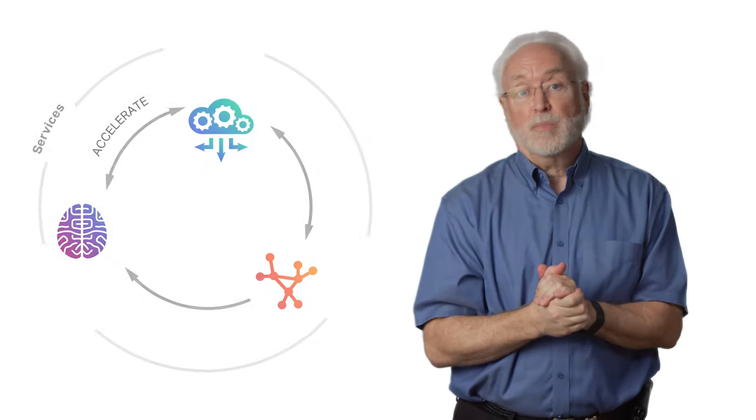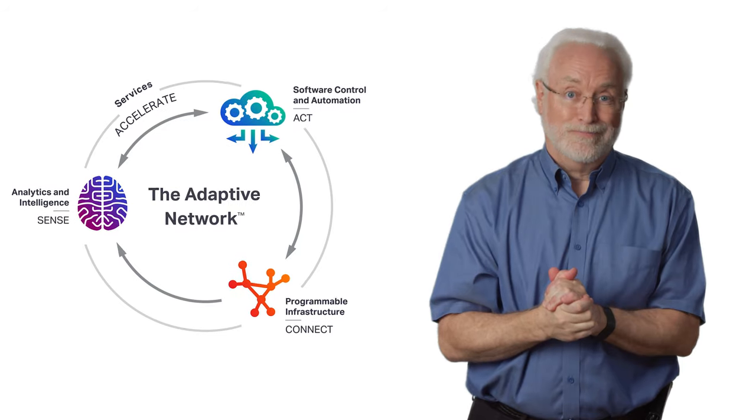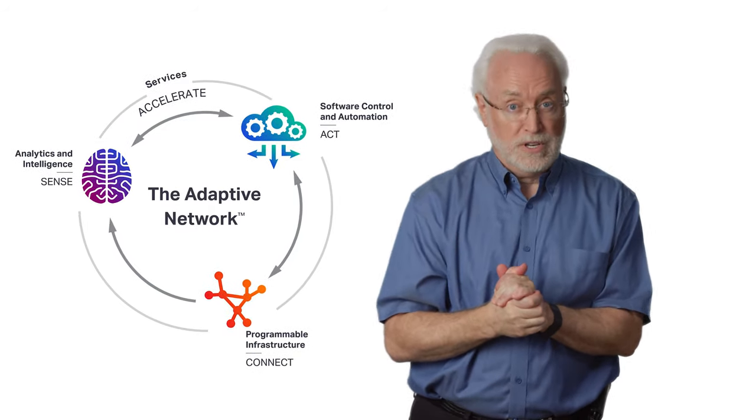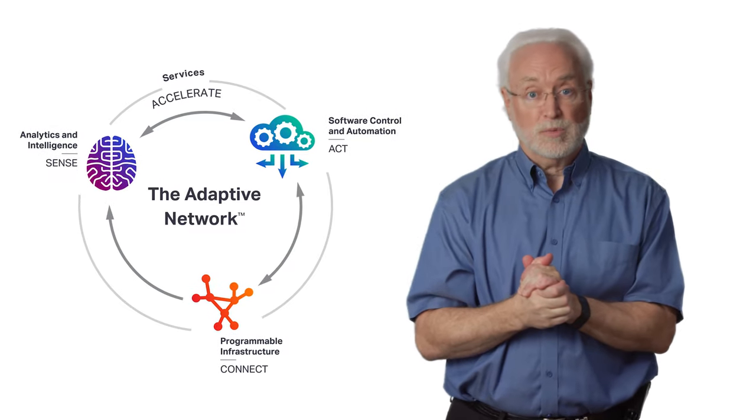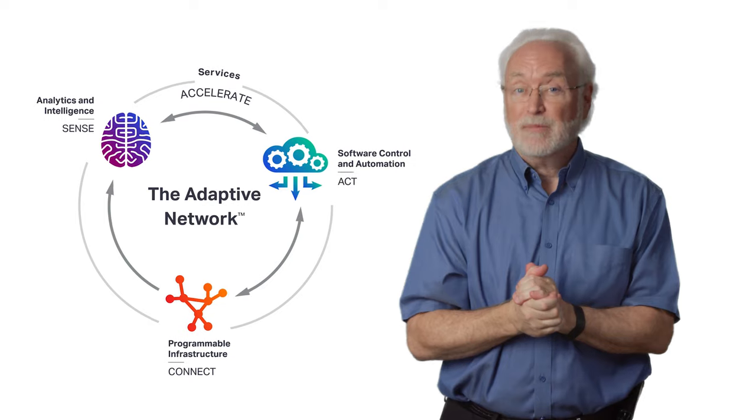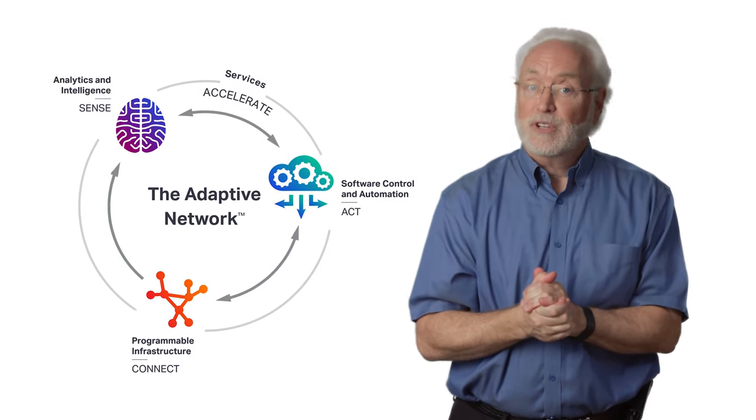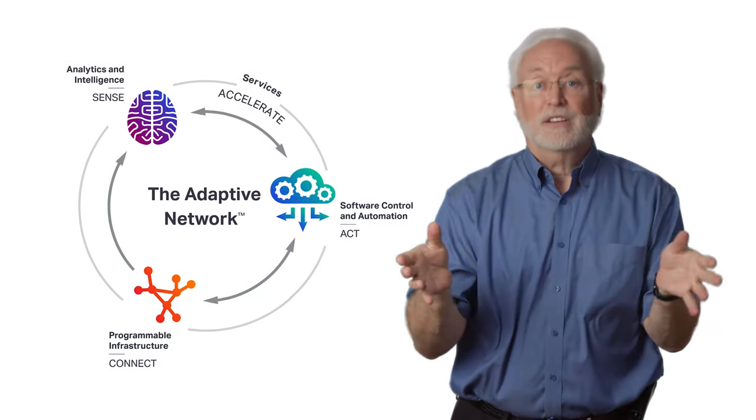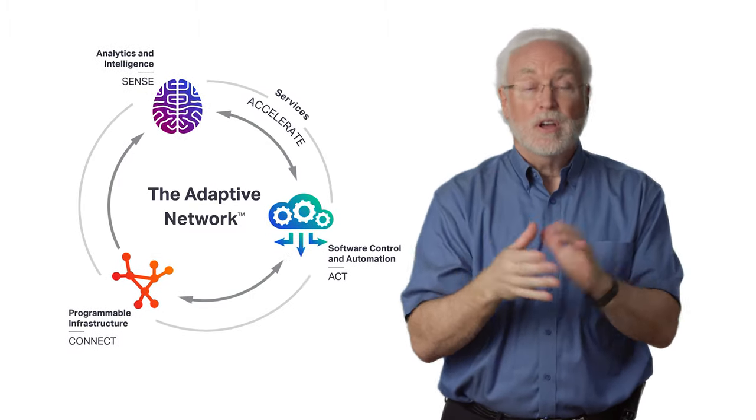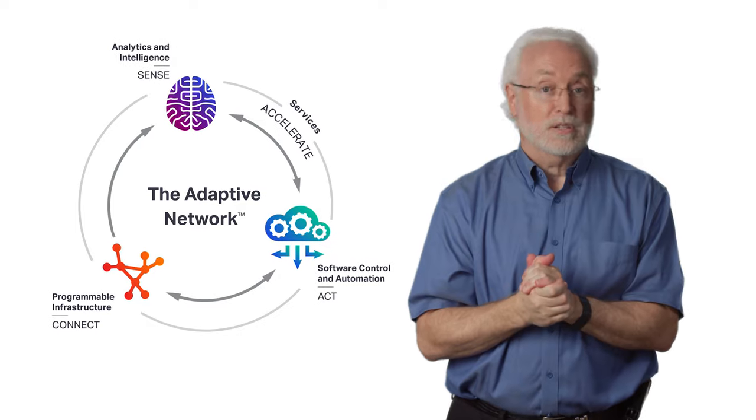The principles we've talked about are part of Sienna's adaptive network vision. These architectural principles are how we build mission-critical, multi-domain, multi-tenant networks for service providers all over the world. At Sienna, we believe that the adaptive network is the desirable end state. It fully leverages programmable infrastructure, analytics, and intelligence. Software control and automation allow us to adapt to the unpredictable demands and applications of tomorrow.